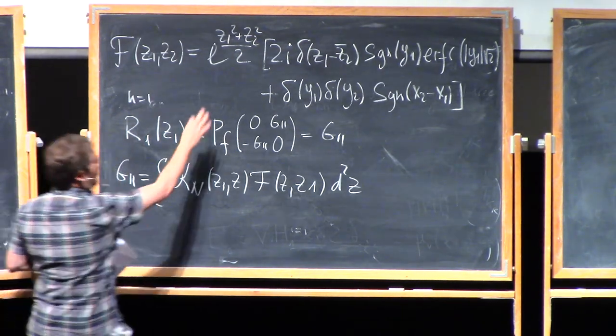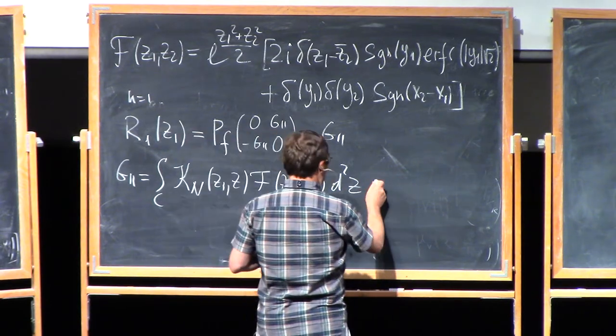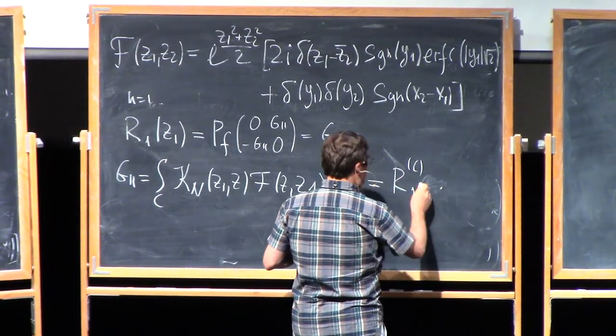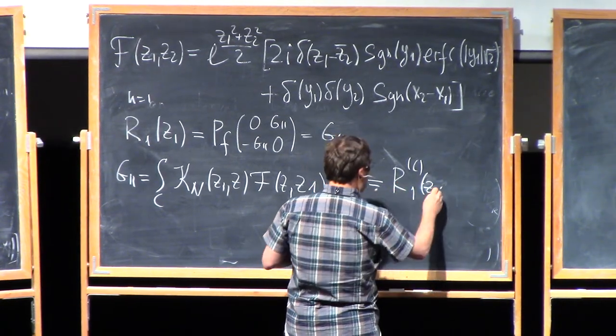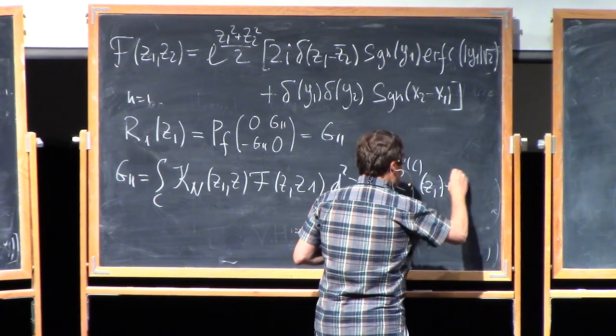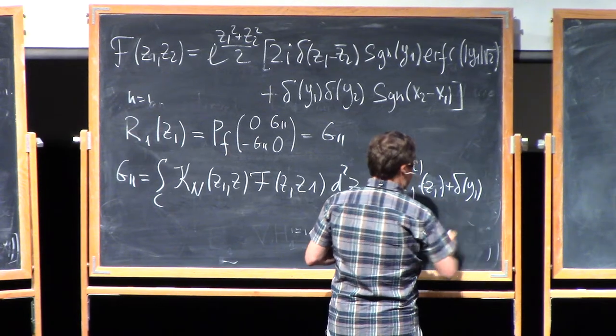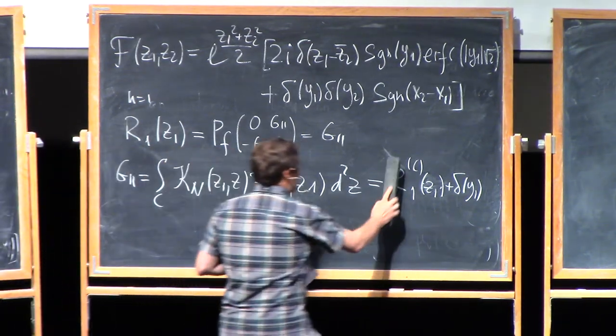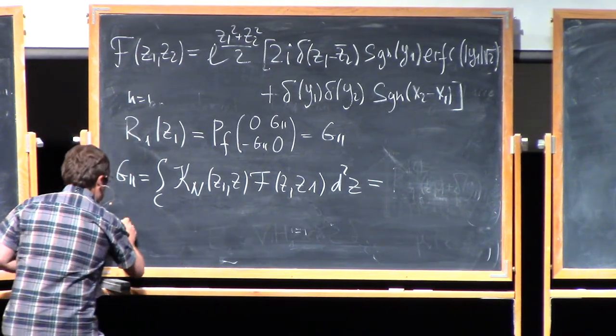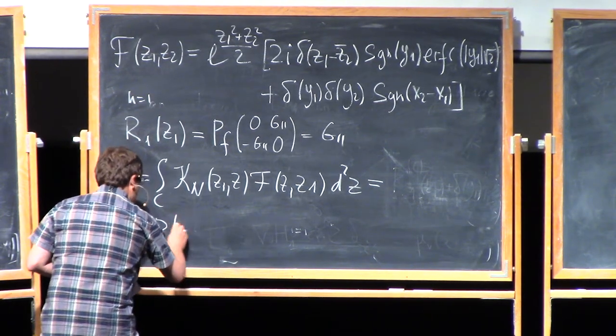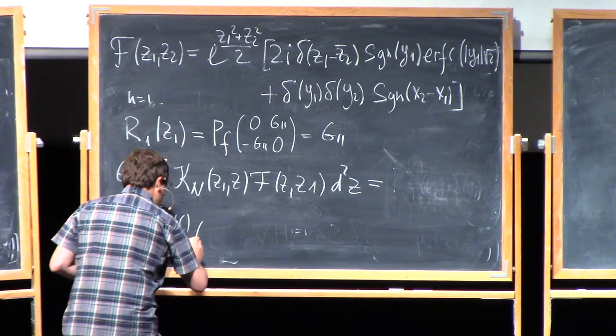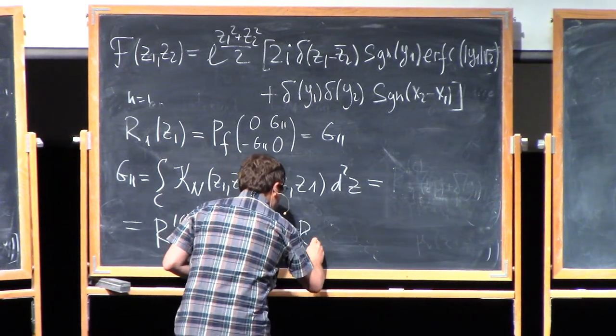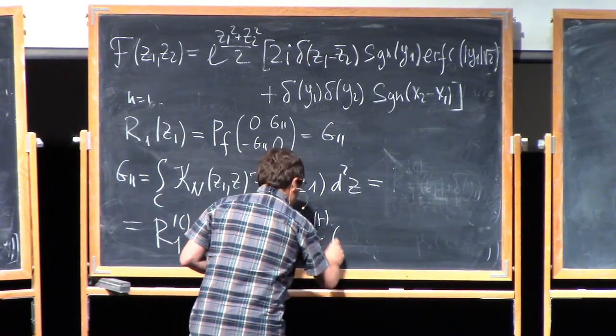So what is G11? G11 is just integral of this K, still mysterious, Kn of Z1, Z, and then this F, which is written above, F of Z, Z1, and we integrate over Z. So we just take this F, substitute here, integrate, and we get these two parts which I will write in the following way, R1C plus delta of Y1.